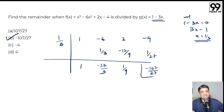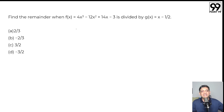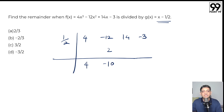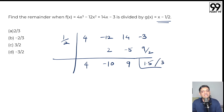Another very similar question: find the remainder when f(x) = 4x³ minus 12x² plus 14x minus 3 is divided by g(x) = x minus 1/2. Applying the same logic, 1/2 occupies the divisor. The coefficients are 4, minus 12, 14, minus 3. Working through: 4 as it is; 1/2 times 4 is 2; minus 12 plus 2 is minus 10; 1/2 times minus 10 is minus 5; 14 minus 5 is 9; 9 times 1/2 is 9/2; 9/2 plus minus 3 is 3/2. So the correct answer is option C, that is 3/2.